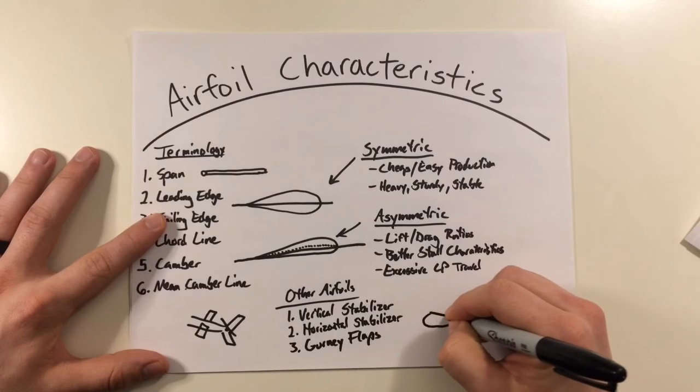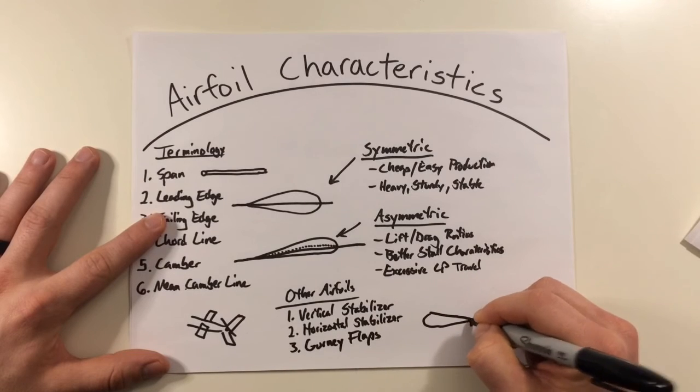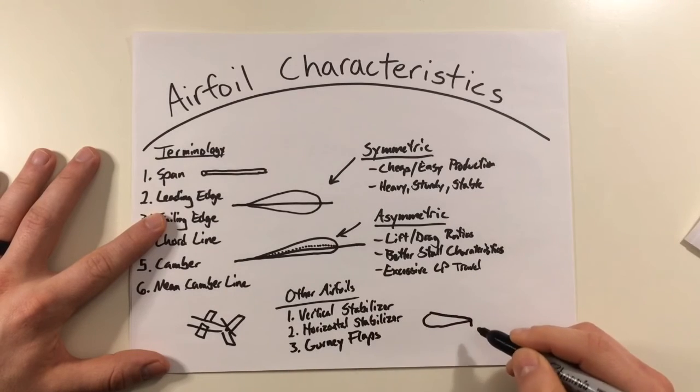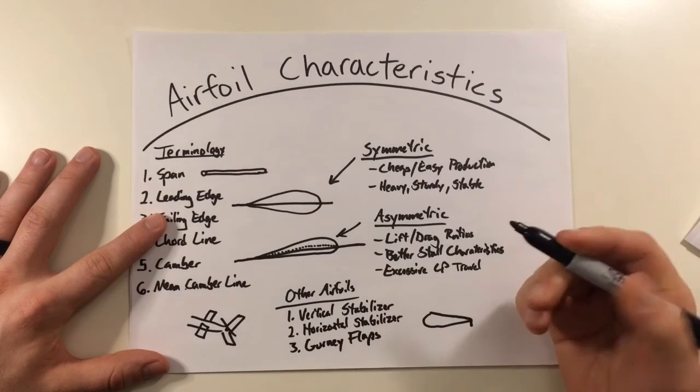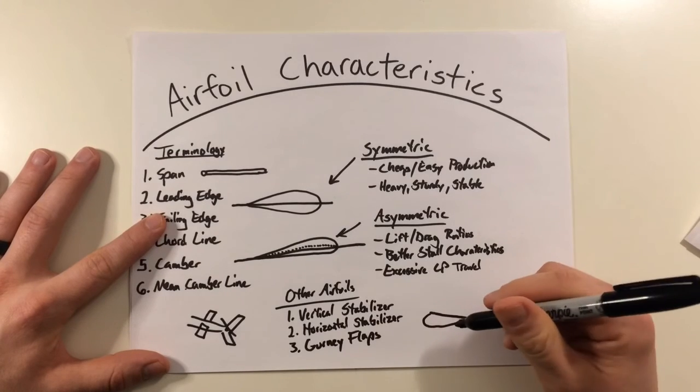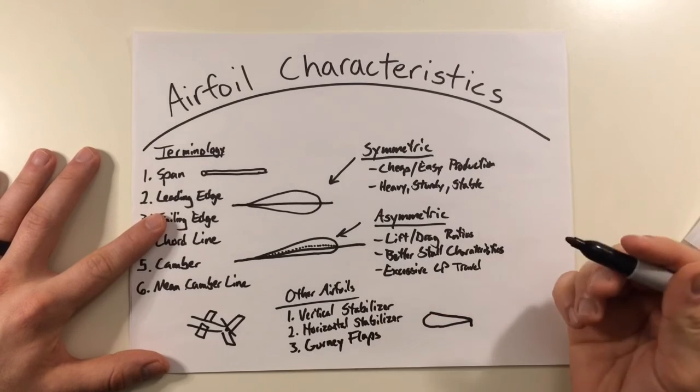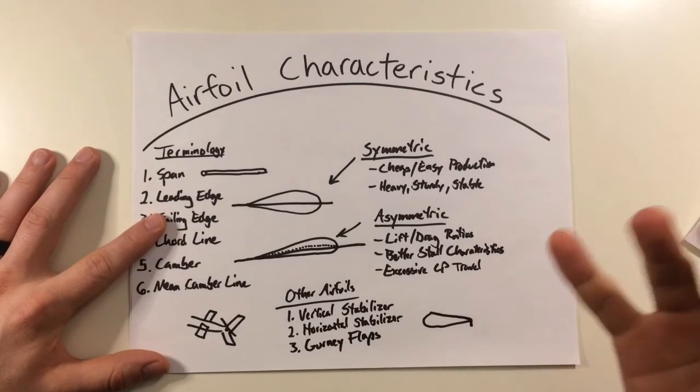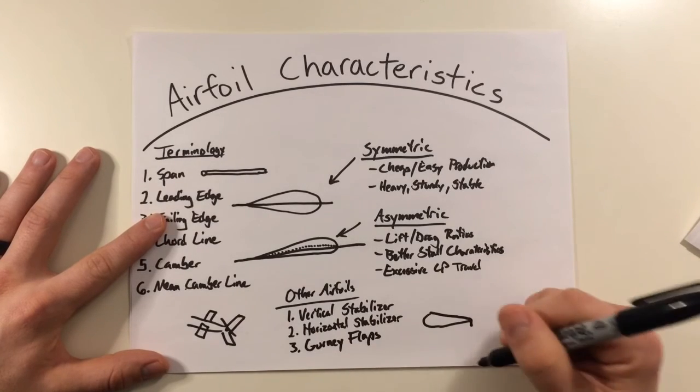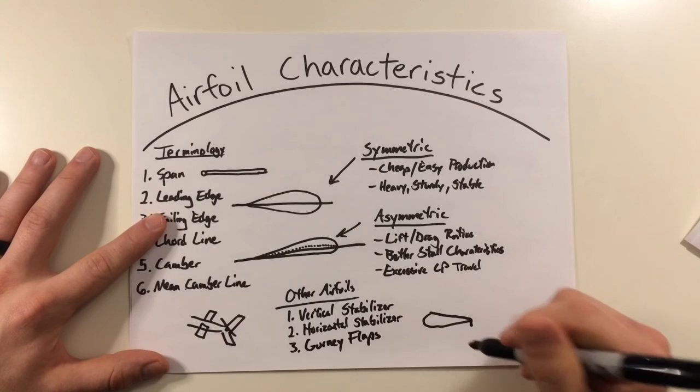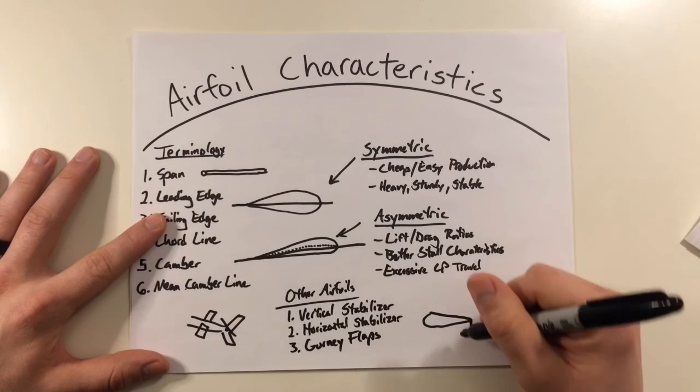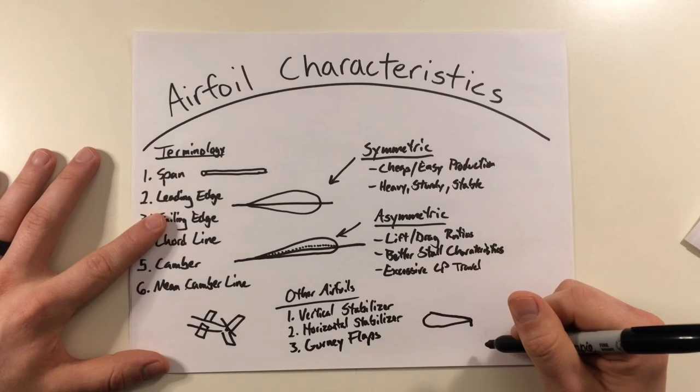So what that looks like is that's your airfoil right here. You can have this little piece of metal flap here at the end. And these were discovered in auto racing by Dan Gurney and later brought into aviation. But what they do, in all simplicity, is just they increase the lift to drag ratio of an already existing airfoil by improving the boundary layer flow across that airfoil.